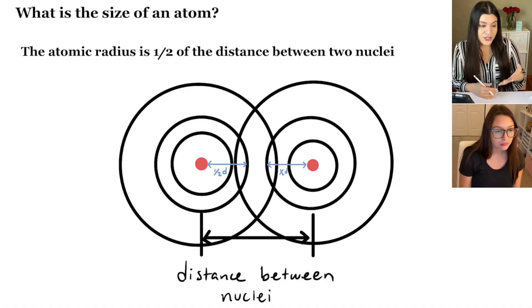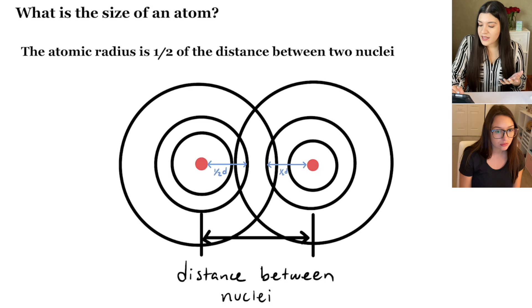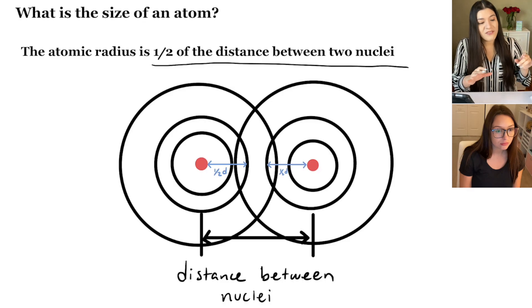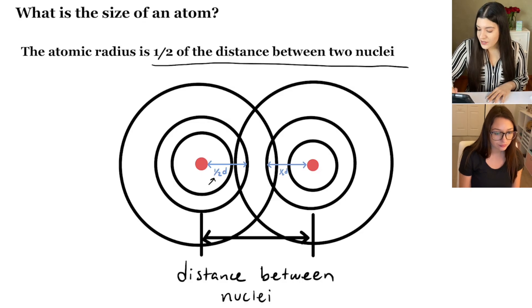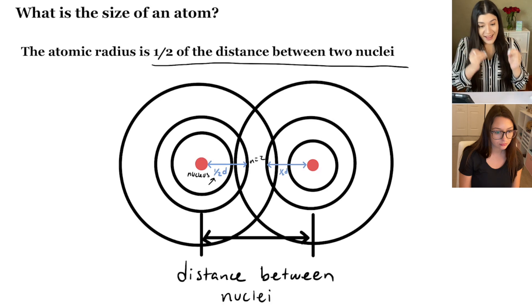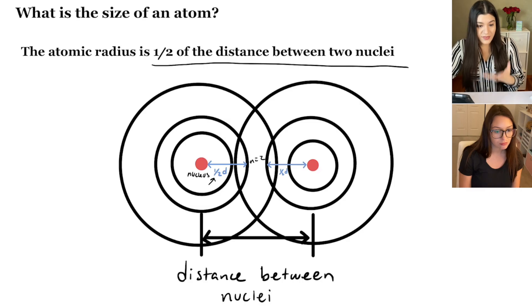When we're talking about the atomic radius, we're actually talking about the size of an atom. Atomic radius is basically one half of the distance between two nuclei. Think of two different atoms next to each other as shown in the picture — we take this distance from the nucleus to one of the energy levels, say n equals two, and that's one half the distance of just one nucleus.